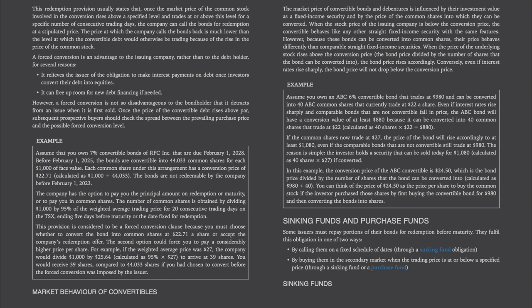The reason is simple: the investor holds a security that can be sold today for $1,080 (40 shares × $27) if converted. In this example, the conversion price of the ABC convertible is $24.50, calculated as the bond price of $980 divided by 40 shares. You can think of $24.50 as the price per share to buy the common stock if the investor first buys the convertible bond for $980 and then converts those bonds into shares.